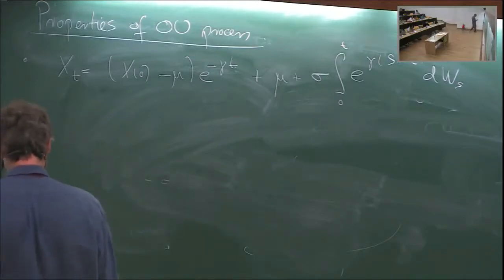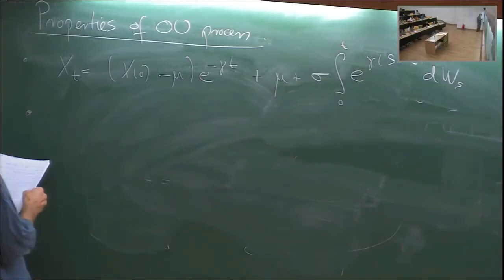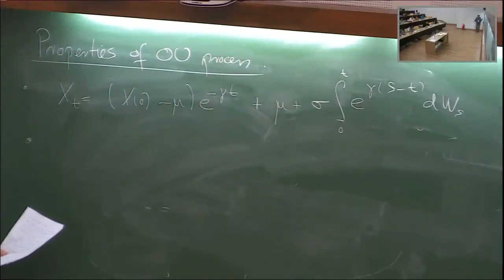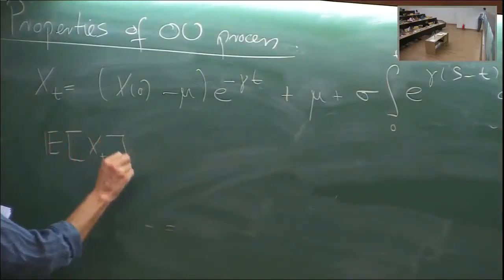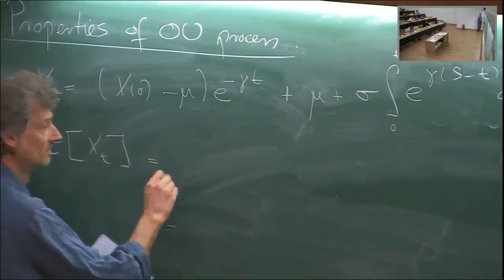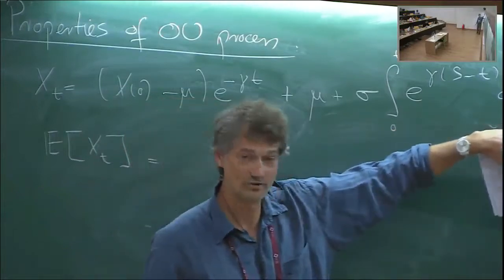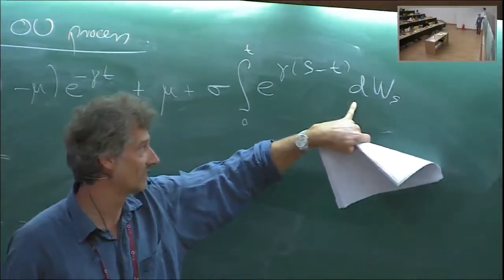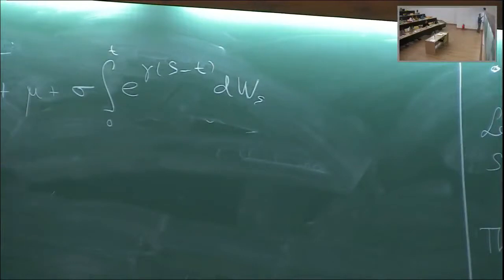It is clearly Gaussian. And since it's Gaussian, we can completely characterize the process by just the mean and the variance. The mean of X_t: the integral term has zero expectation because the mean of each increment is zero. So the mean is E[X_t] = (X_0 - μ)e^{-γt} + μ.